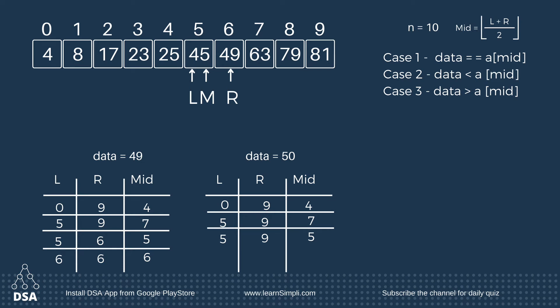Data is greater than the middle value, so the element would be in the right side. The left variable will be mid plus 1, that is 6, and the right variable remains the same, and the mid value becomes 6. Now check if the data is equal to mid.